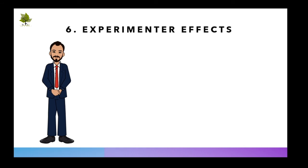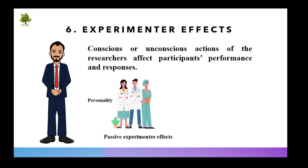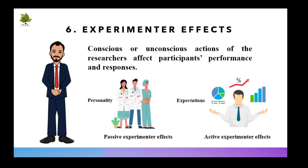Experimenter effects are the conscious or unconscious actions of researchers that affect participants' performance and responses. A researcher's influences on participants or study procedures are known as experimenter effects. Passive experimenter effects occur as a result of characteristics or personality traits of the experimenter, such as gender, age, race, anxiety level, and hostility level — collectively called experimenter personal attributes effects. Active experimenter effects occur when the researcher's expectations of the study results affect his or her behavior and contribute to producing certain research outcomes, referred to as the experimenter bias effect.